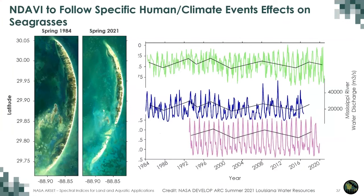The team compared NDAVI, acting as a proxy for submerged aquatic vegetation health, for the entire Chandelier Island system to measure labor on the environment and the water discharge from the Mississippi River. River runoff and precipitation contribute to decreased water quality and also affect water salinity. Historically, submerged aquatic vegetation fares better in lower salinity or fresher water environments, which has major implications for ecosystem changes from planned river diversion projects in the lower Mississippi River in the coming decades.